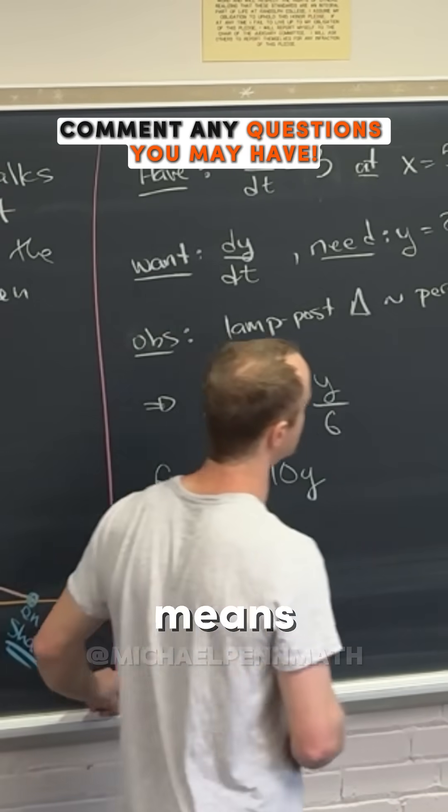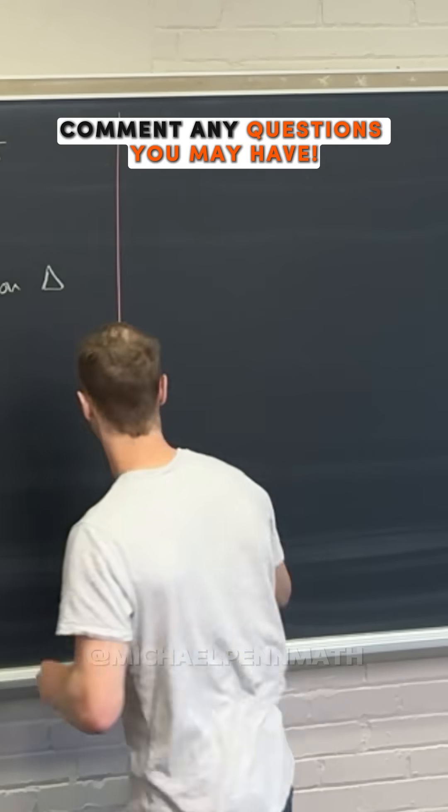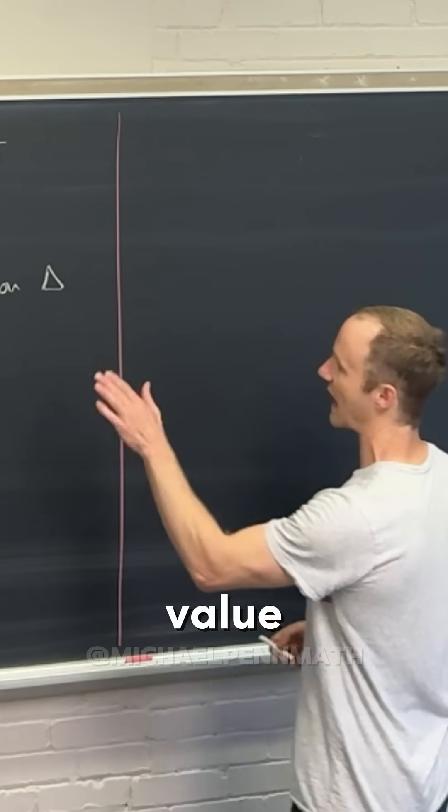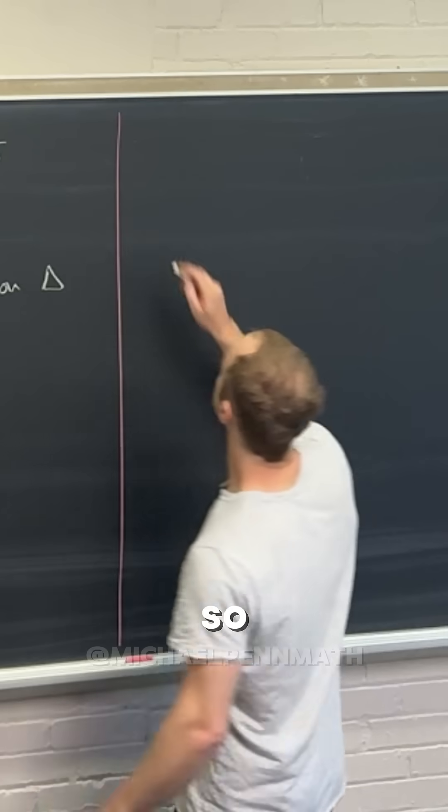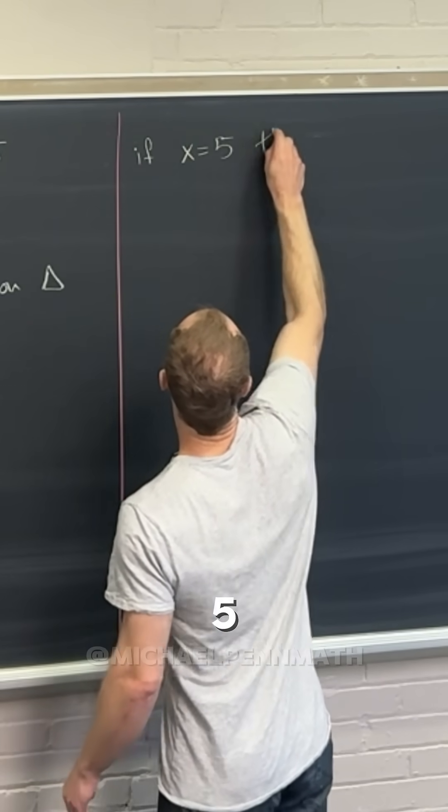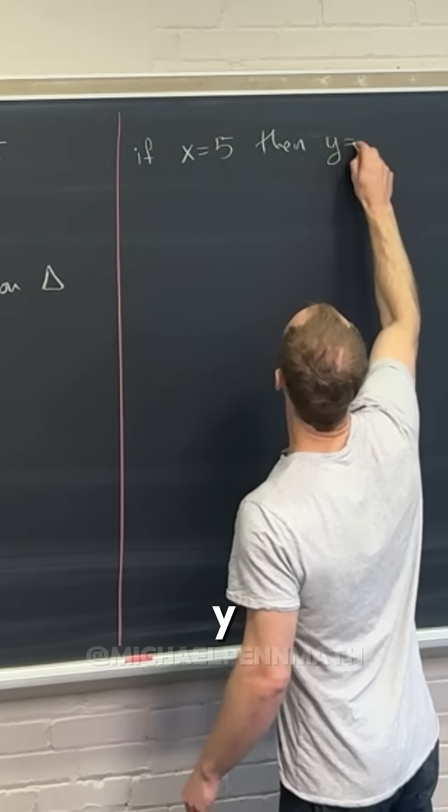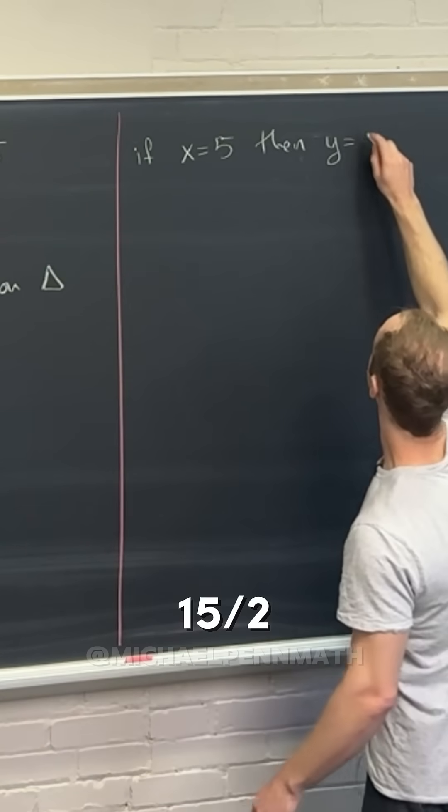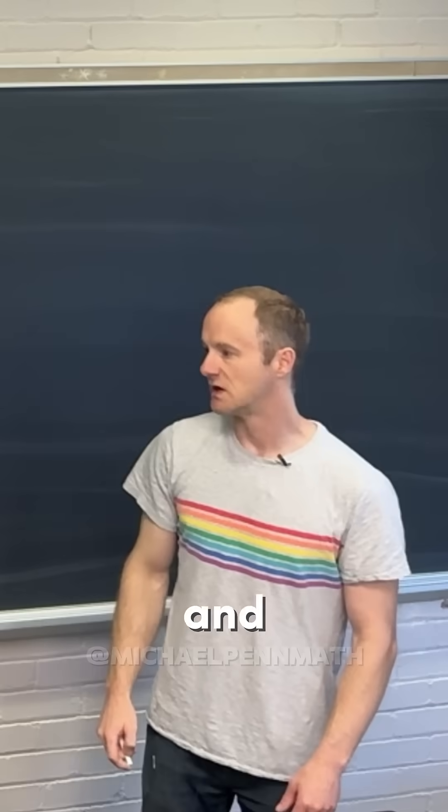That means we immediately have a value of y when x is equal to 5. If x equals 5, then y equals 15 over 2.